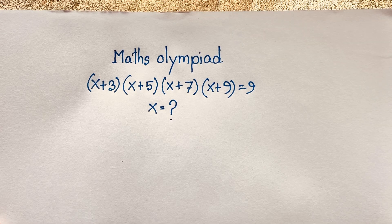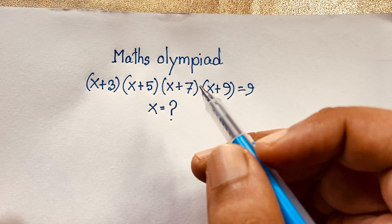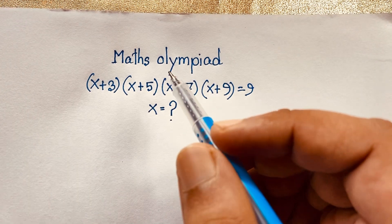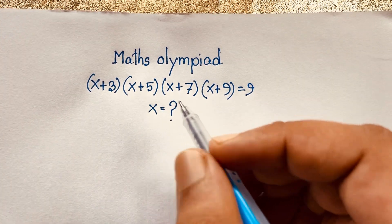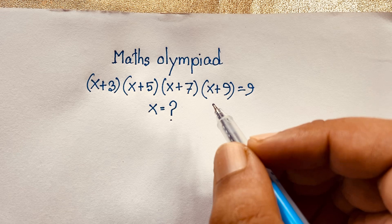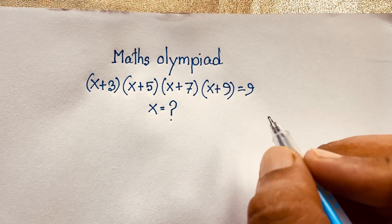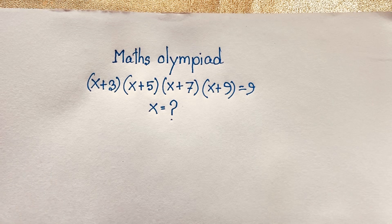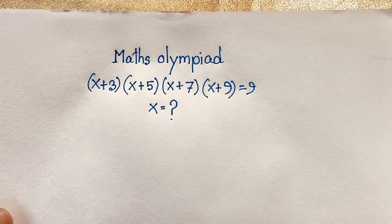Hello everyone, welcome to Rasha's classroom. Today we are solving an interesting math question which is (x+3)(x+5)(x+7)(x+9) = 9. What is x equal to? How do we solve this interesting math problem?